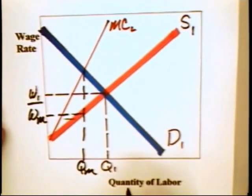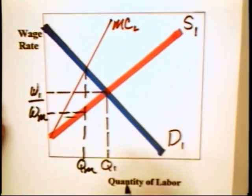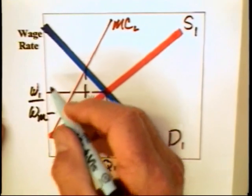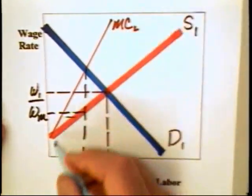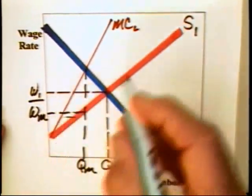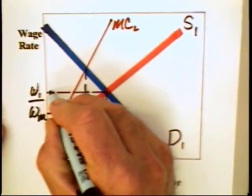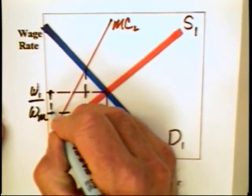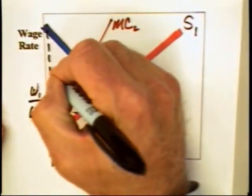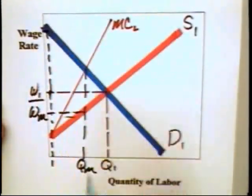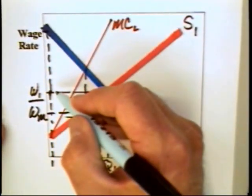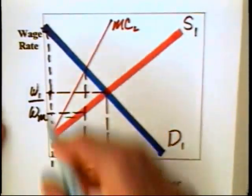How many workers will the monopsony hire? The interesting observation is that the marginal cost of labor is no longer this curve. Why? Because the employers must pay a minimum of W-1. And the marginal cost of the first worker is going to be here, W-1. The marginal value of that first worker is way up there, so there is profit to be made off of that worker, and as a consequence, that worker will be hired.